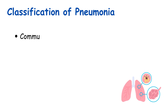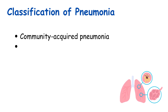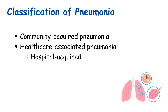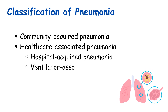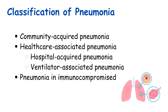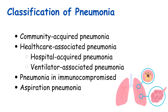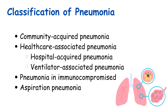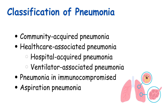Pneumonia can be classified based on where the infection was believed to have been acquired: community-acquired pneumonia and healthcare-associated pneumonia. Healthcare-associated pneumonia can be further divided into hospital-acquired pneumonia and ventilator-associated pneumonia. There are special categories too: pneumonia in immunocompromised patients and aspiration pneumonia. This classification is useful because causative organisms vary according to the environment from which the infection was acquired.